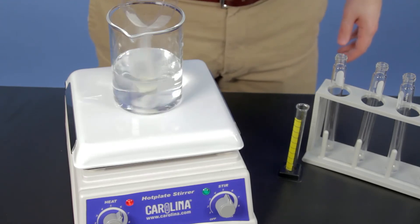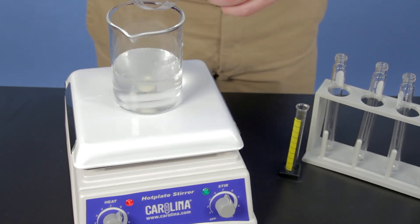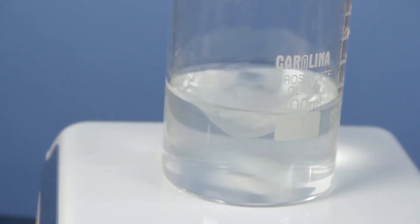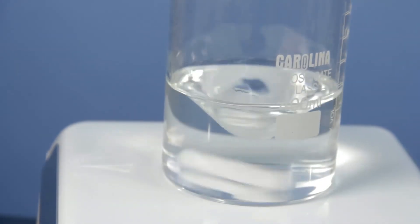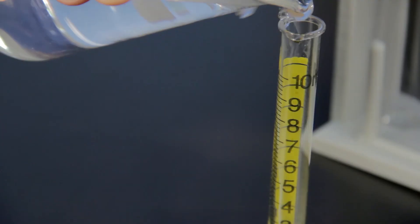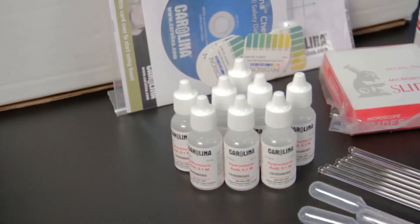The kit comes ready to use, so teacher preparation time is minimal, and all activities are designed to easily fit in a typical 50-minute class period. One thing to remember is that both the gelatin and the gum arabic solution need to be made in advance and chilled prior to the lab.